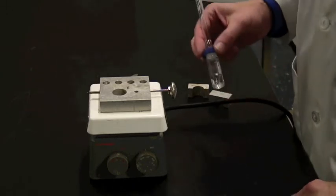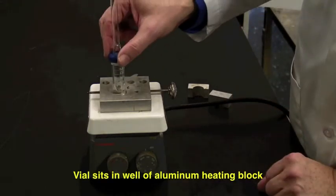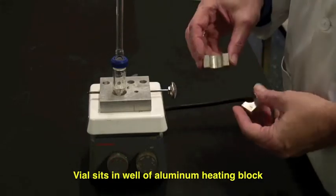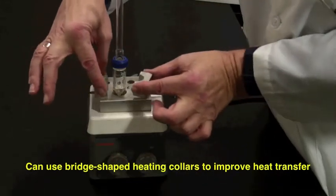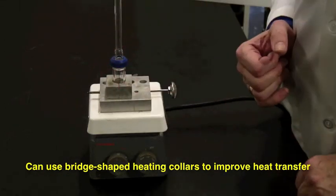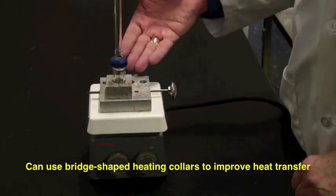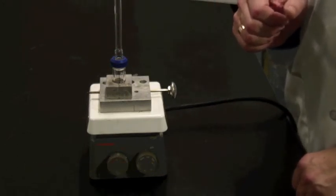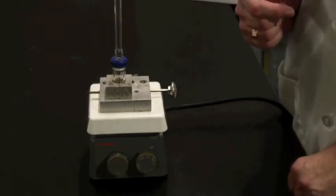Now, if I was going to heat this container, it would sit here inside the heating block and would warm up. You'll get better heat transfer if you use these bridge-shaped blocks, and that will increase the contact and the heat transfer from the heater to the block to the liquid inside your glass container here.